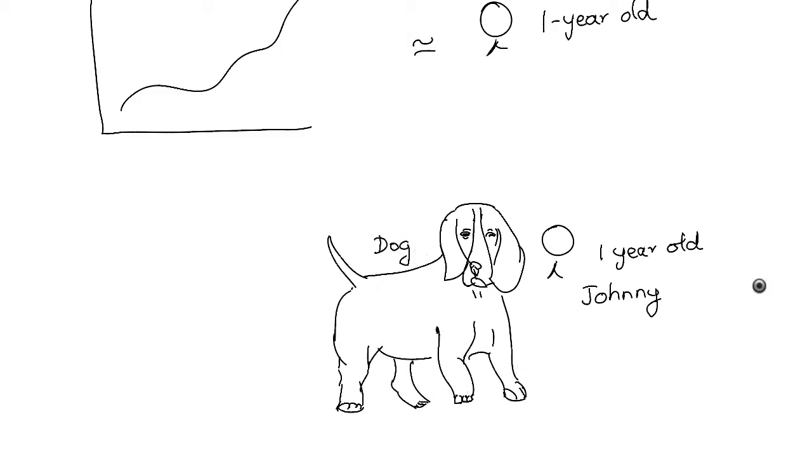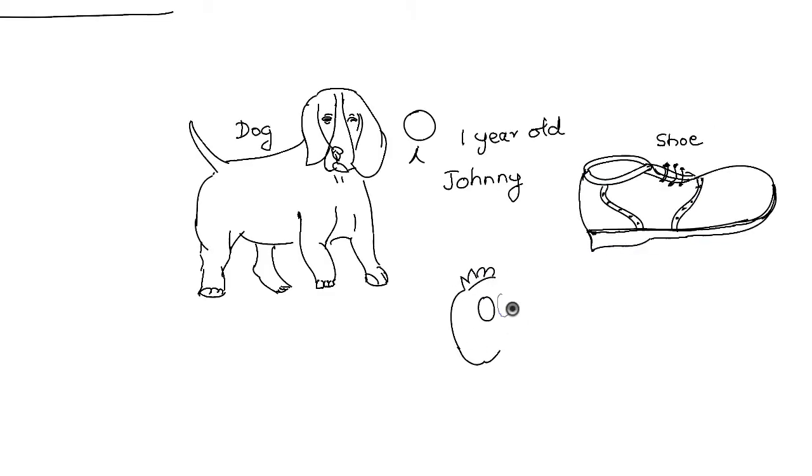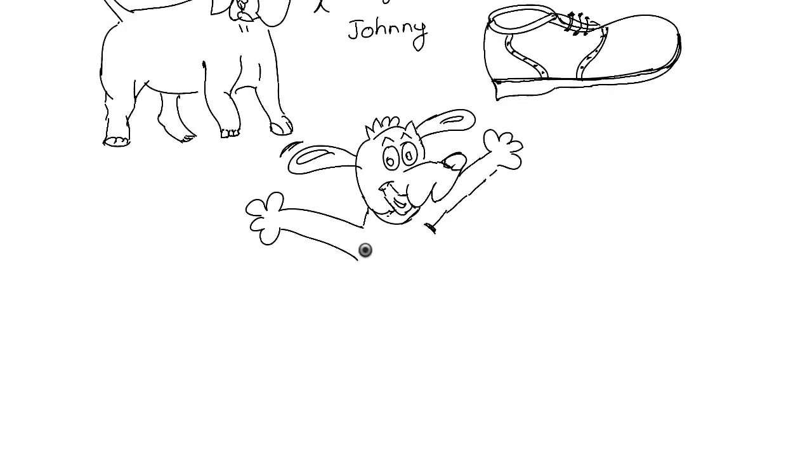You can teach him to recognize a dog and recognize a shoe. When Johnny spots a dog he can immediately recognize it even though this one may look nothing like the one you taught him to recognize.